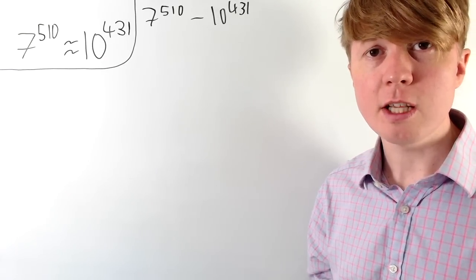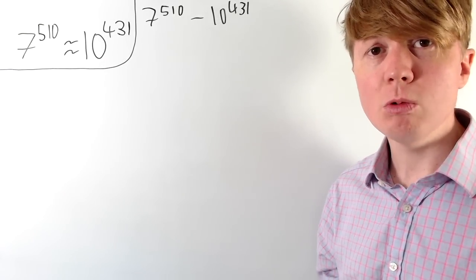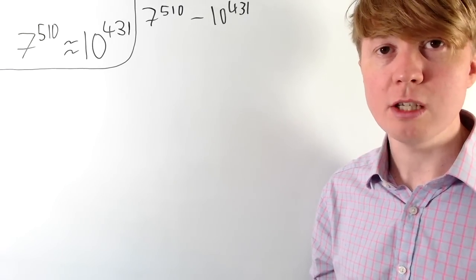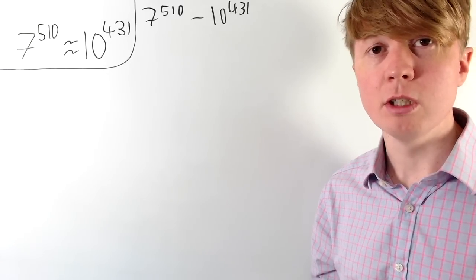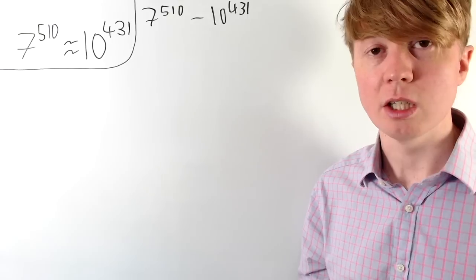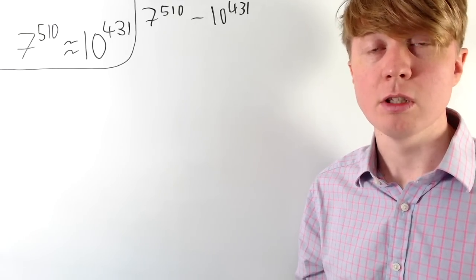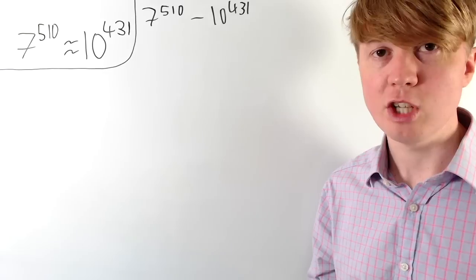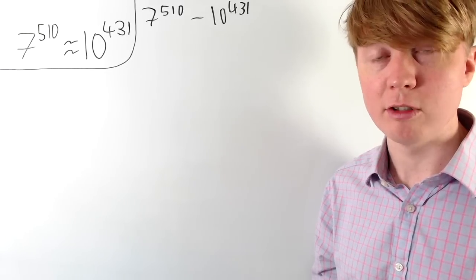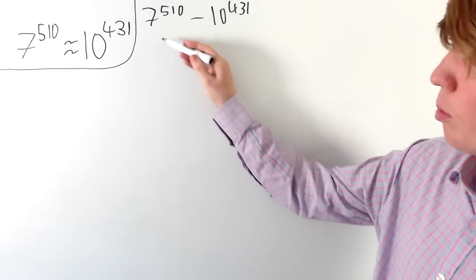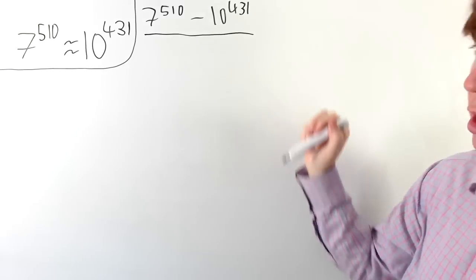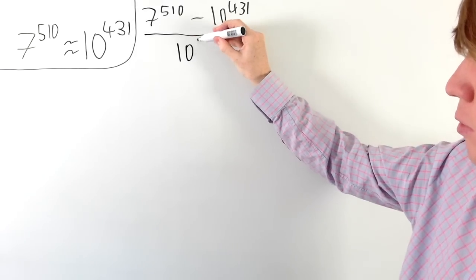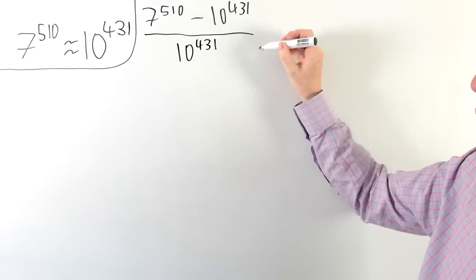If we think about this in terms of the sense of scale we're working at here, both of these numbers have actually got 432 digits each. So if the difference between them has only got 425 digits, that's not too bad considering the scale we're working at. We can make this a little bit more formal by calculating the percentage error. If we use 7 to the 510 to approximate 10 to the 431, we can calculate the percentage error just by finding the difference and dividing by 10 to the 431.